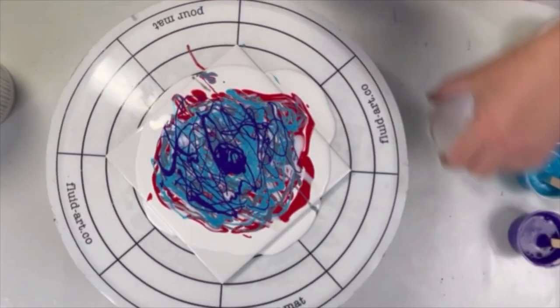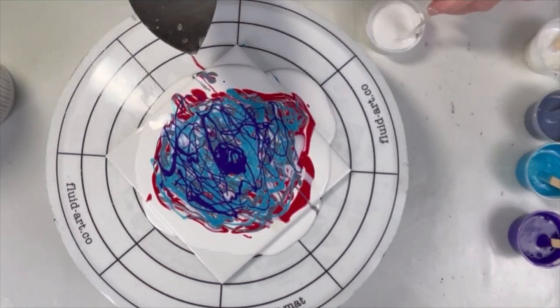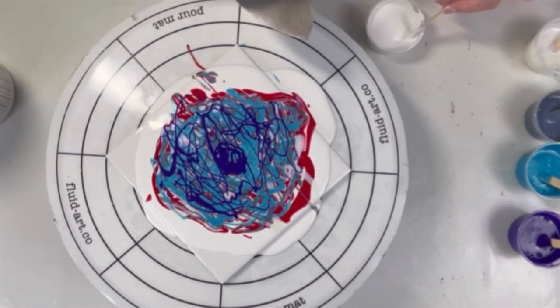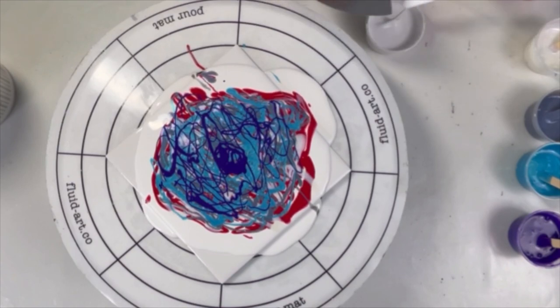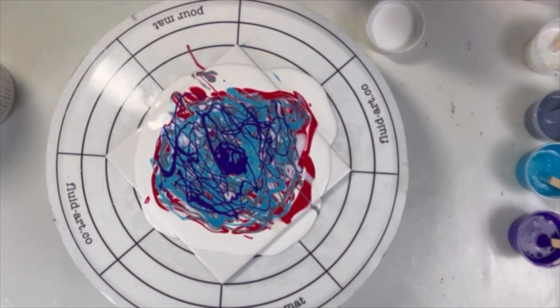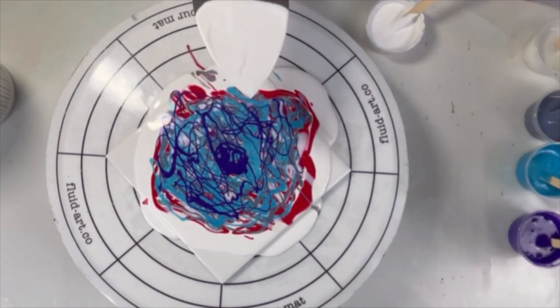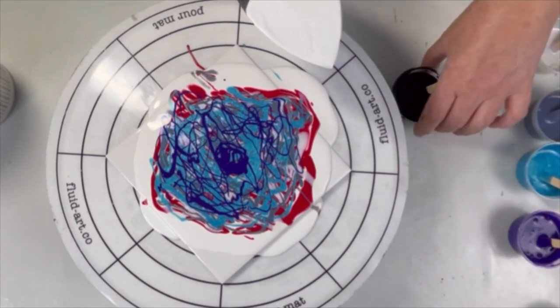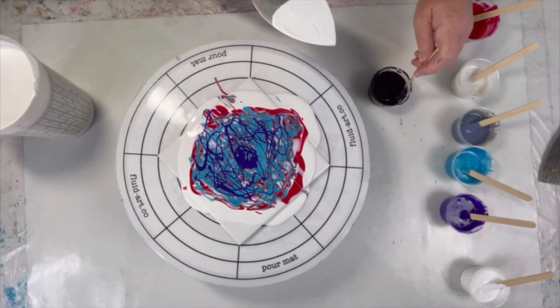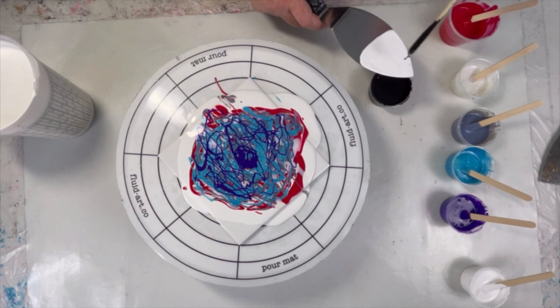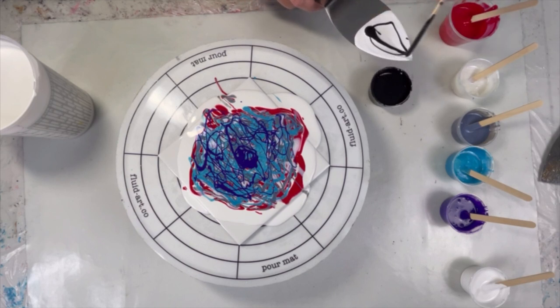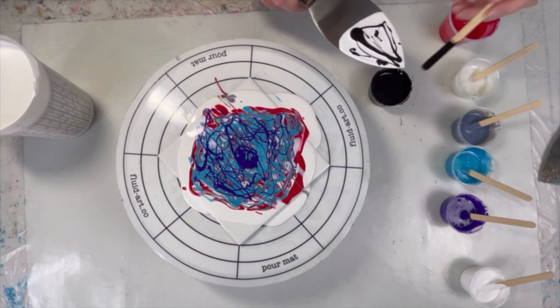Okay. My cell activator is mixed two to one, two parts Australian Floetrol to one part paint. I guess I'm going to do black first then white, which means I got to put the white down first and then put the black on. So there's my white.